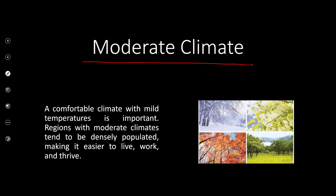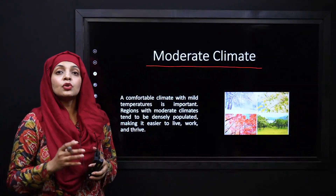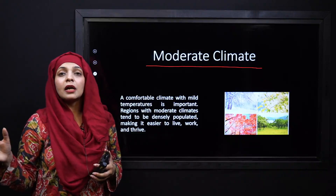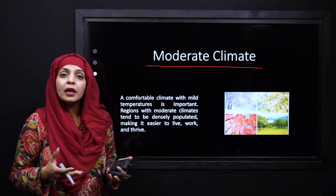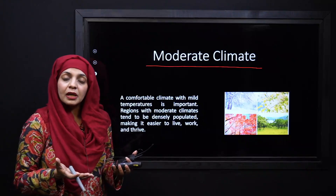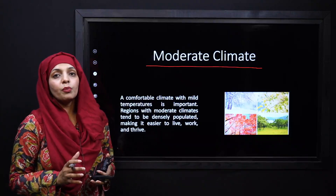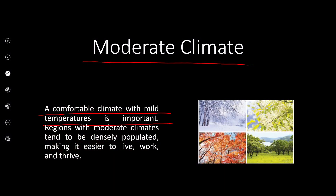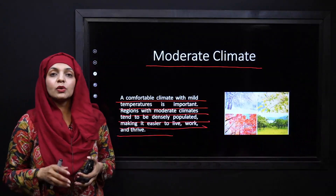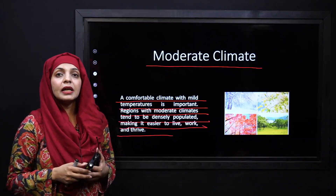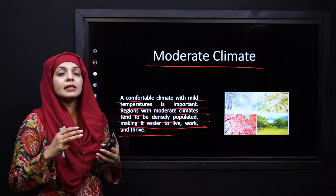Next is moderate climate. Where you get to see four seasons and a climate where you can live comfortably, people always settle there. Antarctica, for example, is virtually empty — no one stays there because the temperature and climate are very extreme and not favourable for living. People always opt to settle where the climate is moderate. A comfortable climate with mild temperatures is important; regions with moderate climates tend to be densely populated, making it easier to live, work, and thrive. In Pakistan's Indus Plains, temperatures are moderate — slightly harsh in summer, but still quite favourable for agricultural activities, which is why these areas are very densely populated.